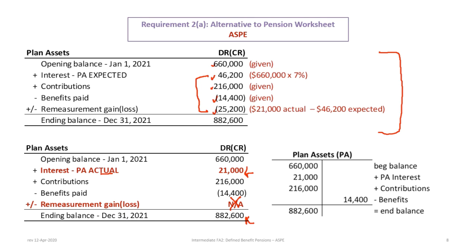If you still like your T-accounts, the beginning balance now includes the actual interest of 21,000 instead of the expected, leaving out a separate adjustment to make up the difference to the actual. Add the contributions, remove the benefits, and you end up with your ending balance of $882,600.